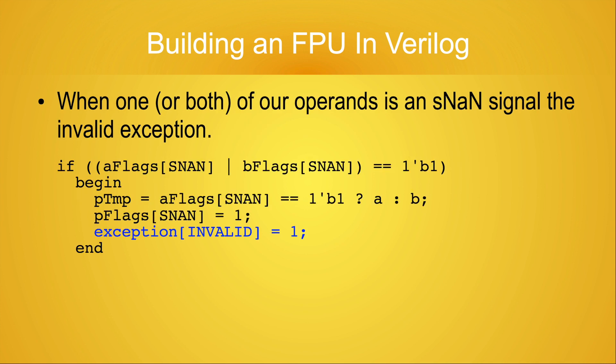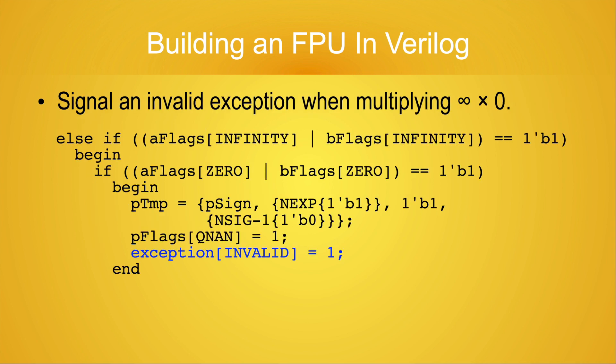Since the code is now signaling exceptions, in the case that one or both of our operands is a signaling NaN, we need to signal the invalid exception. We also need to signal the invalid exception if we're trying to multiply infinity times zero.